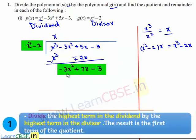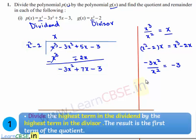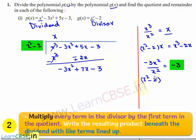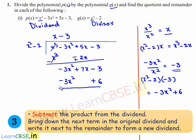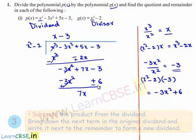Now the highest degree term of the new dividend is minus 3x square and the highest degree term of the divisor is x square. So on dividing them, we get minus 3. Now the divisor x square minus 2 multiplied by minus 3 gives minus 3x square plus 6, and minus 3 can be written in the place of the quotient. So the quotient is x minus 3 and the multiplication minus 3x square plus 6 is written here. On subtracting, we get plus sign and minus sign, so minus 3x square and plus 3x square get cancelled, and here it is 7x minus 3, and minus 6 is minus 9.